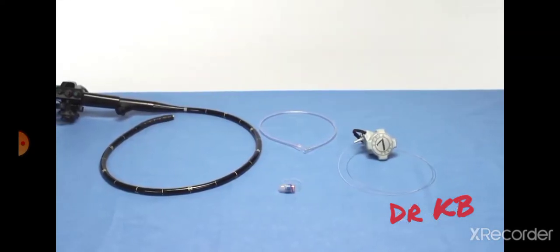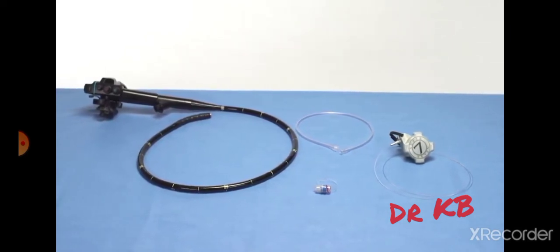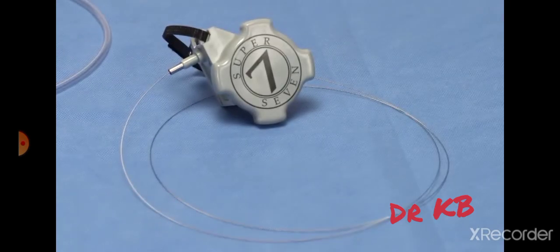Upon opening the package of the Speedband SuperView Super 7 device, you will find two components: the ligating unit and the handle unit with tripwire and scope fastener.